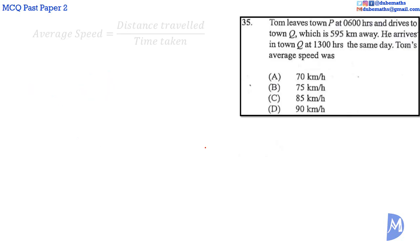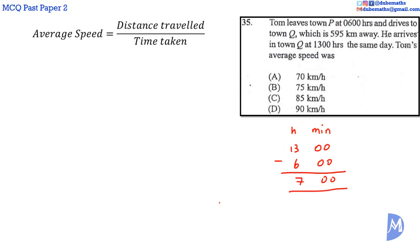Question 35. Average speed is equal to distance traveled over time taken. The distance is given as 595 kilometers. Time taken is from 0600 hours to 1300 hours on the same day, which is equal to 7 hours.